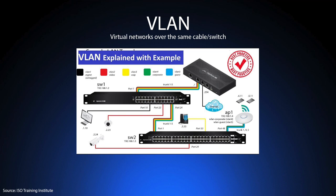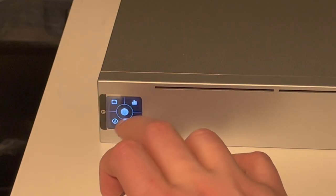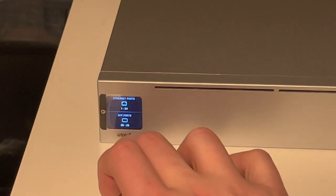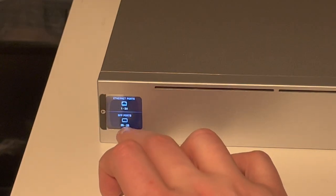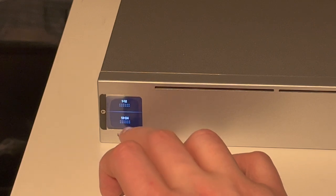A VLAN has two modes: untagged or tagged. A tagged VLAN is meant to pass through a VLAN from one device, such as a switch or an access point, to another. An untagged VLAN is meant for end-user devices such as a computer, a phone, or a gaming console.